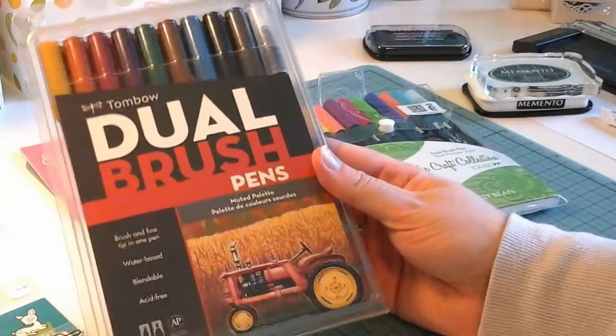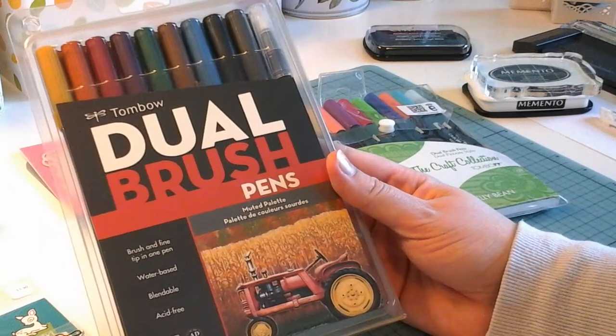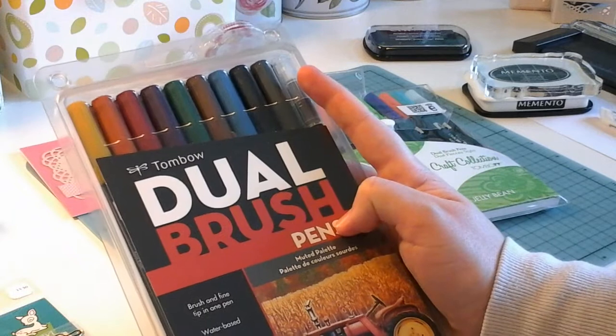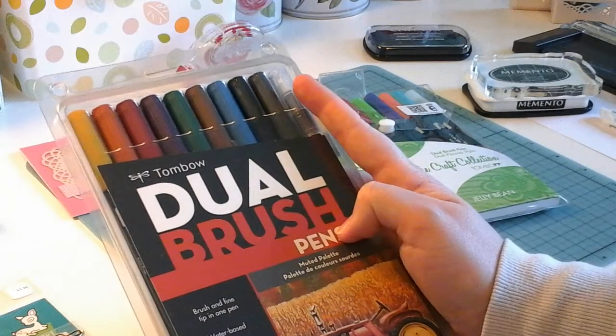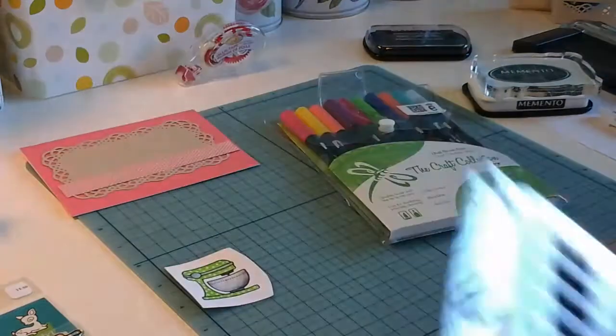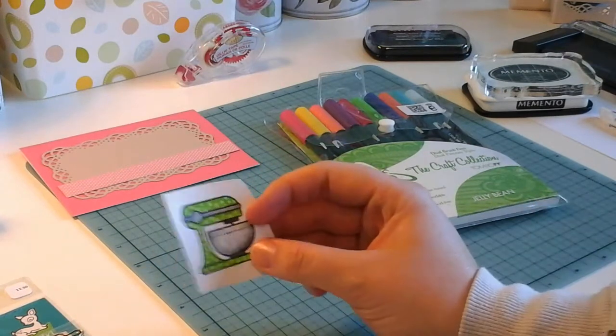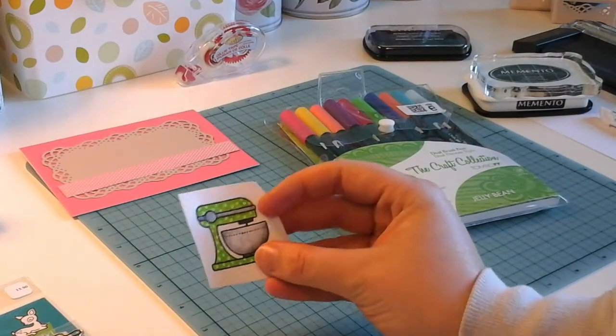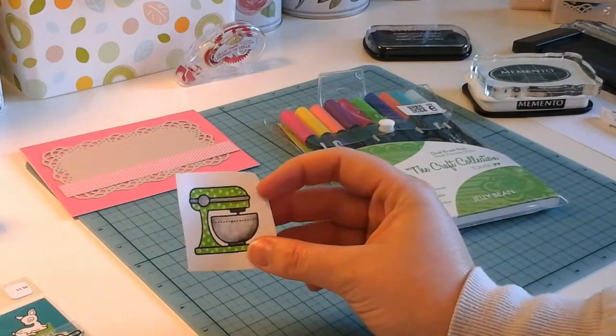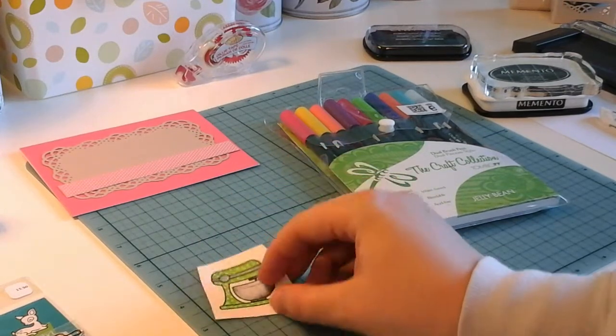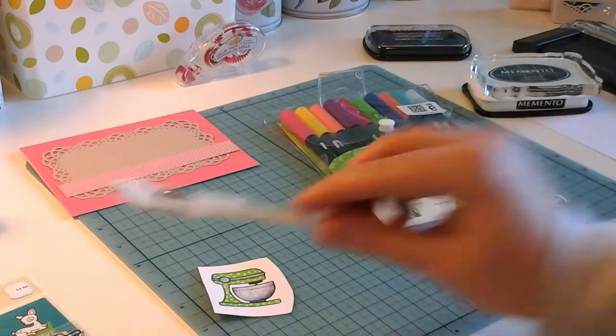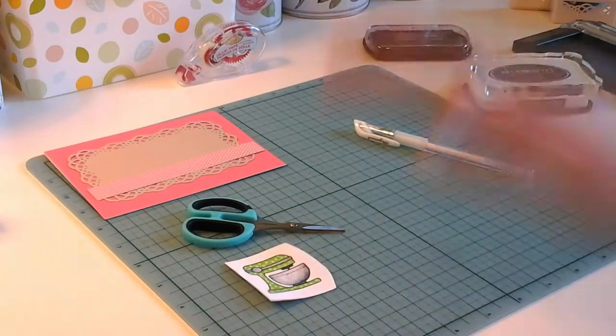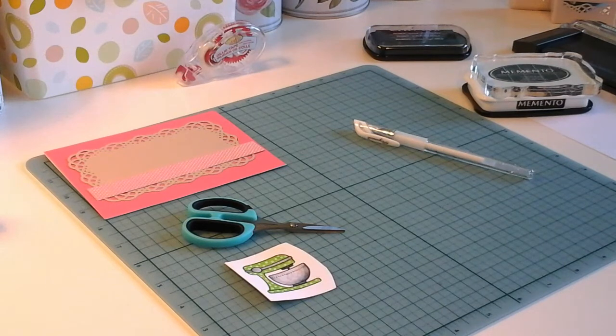I used my Tombow dual brush pen muted palette. I used the gray and the colorless blender. I just touched the colorless blender to the gray to pick up some color and did the darker parts with the gray marker and the lighter blending with the colorless blender. Then I wanted some polka dots, so I used a white gel pen. I'll just go ahead and fussy cut that image out now with my detail scissors.